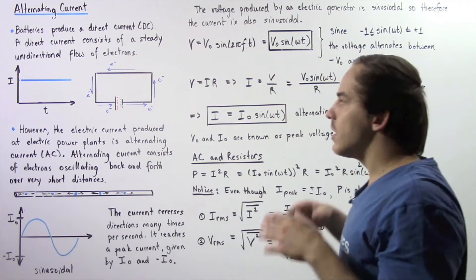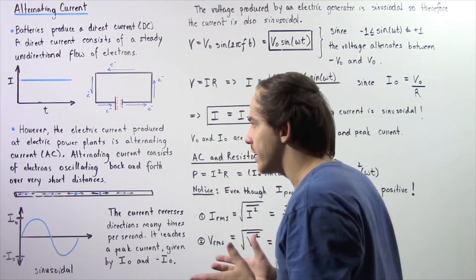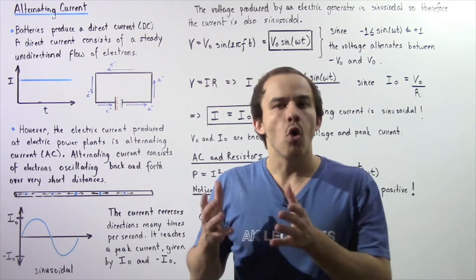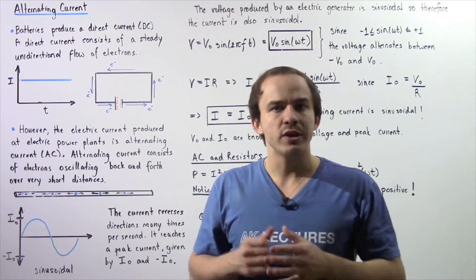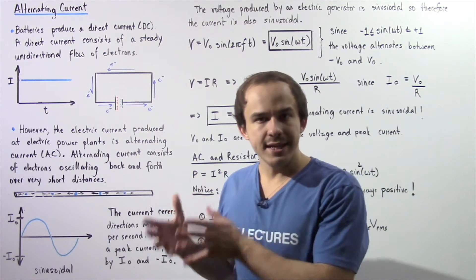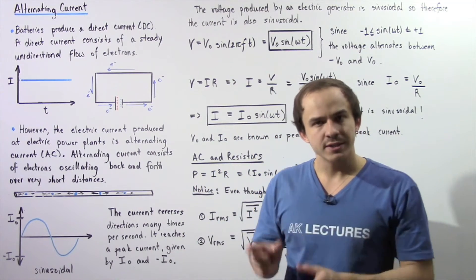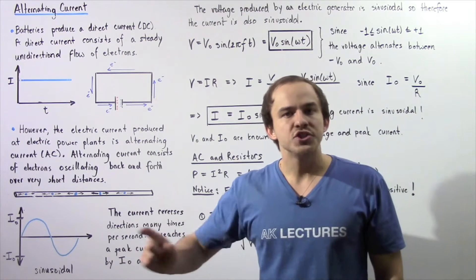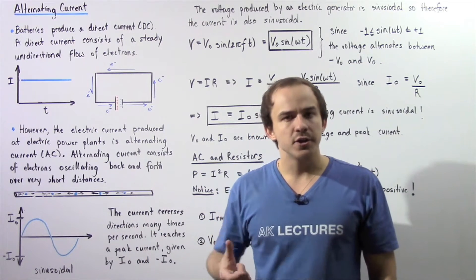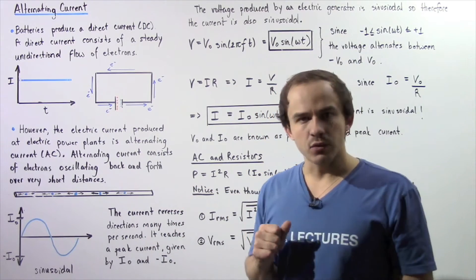On the other hand, the electric current generated at electric power plants is an alternating current, known as AC. Unlike DC — unlike a direct current — an alternating current consists of electrons which oscillate back and forth over very short distances, as described in the following diagram.